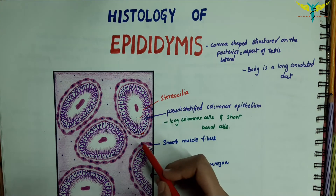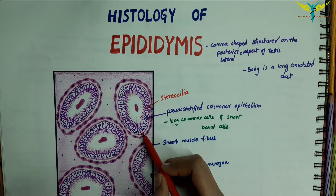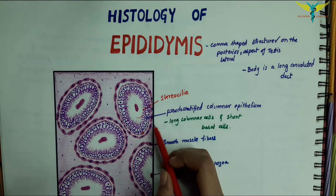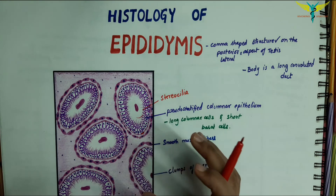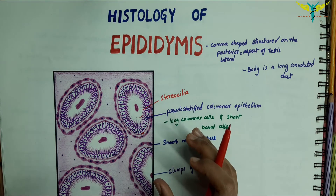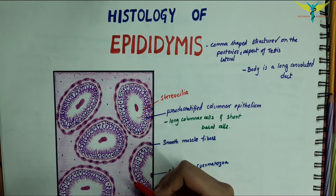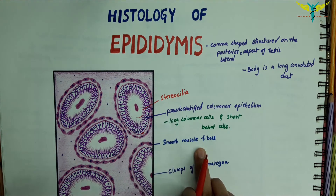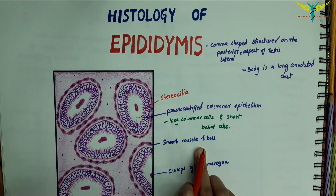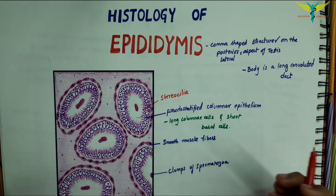Beneath the epithelium there is a layer of smooth muscle fibers, and this muscle layer increases in thickness gradually from the head to the tail. In the tail region, the muscle fibers may be organized into inner circular and outer longitudinal layers.